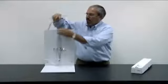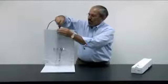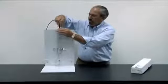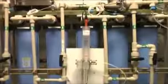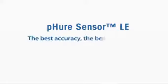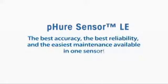This sensor design is available for both new and previous-generation instruments. The new PureSensor LE is just one of many amazing solutions Mettler Toledo Thornton can provide for power water analytics. It solves the challenge of measuring pH in very low-conductivity water with the best accuracy, the best reliability, and the easiest maintenance available in one sensor.